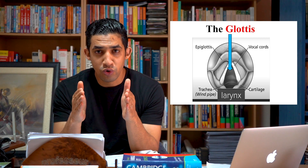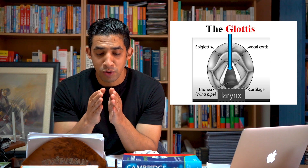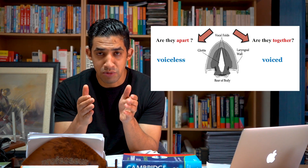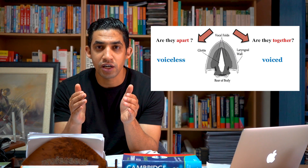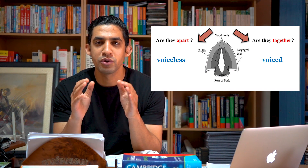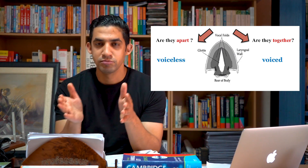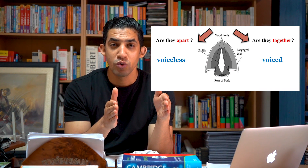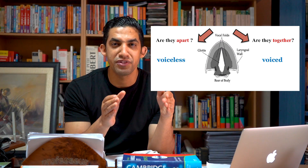The glottis is very important in the production of speech. When the glottis is closed, the vocal cords are brought together and we are producing voiced sounds. But when the glottis is open — when the vocal cords are apart — we are producing voiceless sounds. The glottis marks the transition from mere airflow to the actual production of voice.